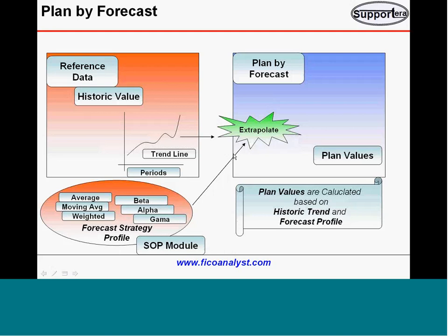This is trend only. For example, December might have a weight of 50% and January only 5%. So based on that trend and the reference data, the system will plan more in December and less in January. This data is available in the forecast once you do the APO or SOP planning. From that forecast, you can reference it and do the COPA planning.